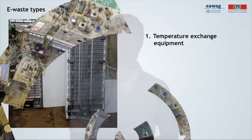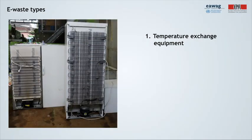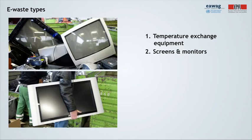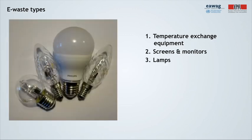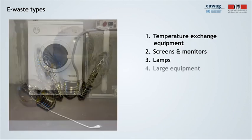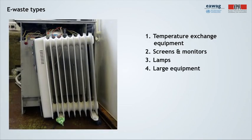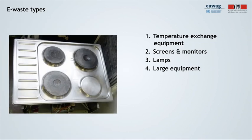Electrical and electronic equipment, and therefore also e-waste, can be classified into the following six categories: temperature exchange equipment such as refrigerators or air conditioners; screens and monitors; lamps; large equipment such as washing machines, heating systems, electric stoves, photovoltaic panels, etc.